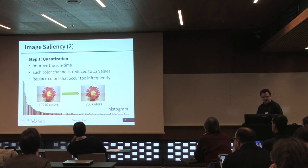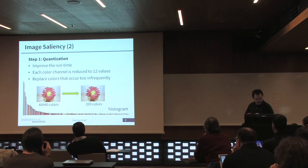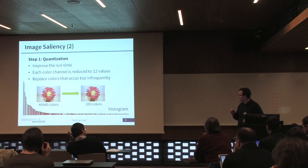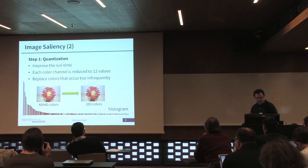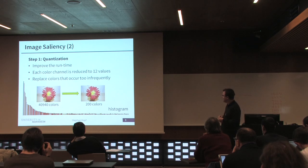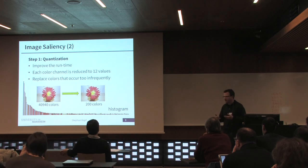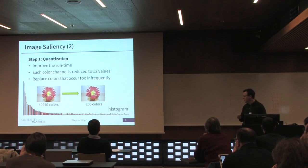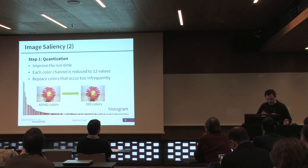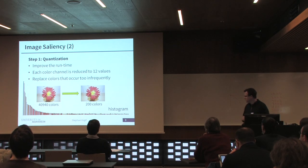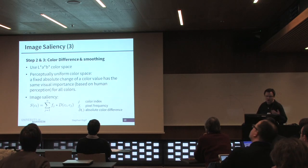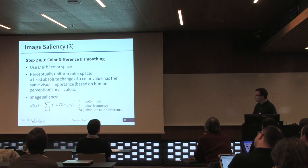How does quantization work? The goal is to improve runtime. We look at RGB color space and reduce each color channel to 12 different values. In addition, we replace colors that occur too infrequently with already available colors. In this example, we have an image with about 40,000 colors and reduce it to 200 different colors. The histogram of these 200 colors is shown, and the following step of the algorithm only considers this histogram, so the complexity is reduced to processing about 200 values.